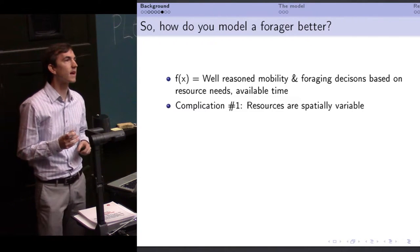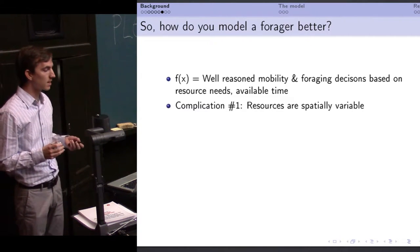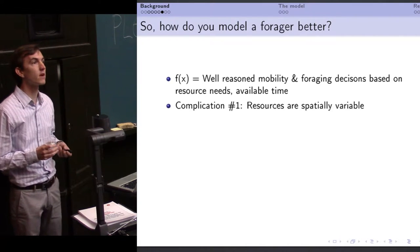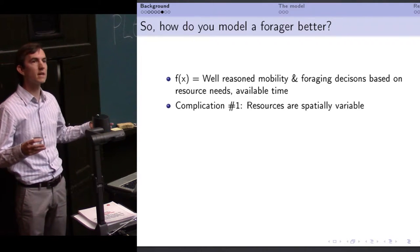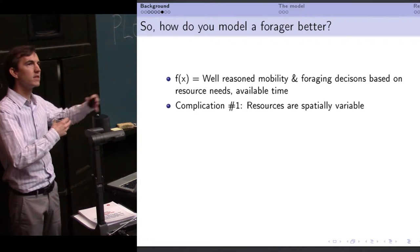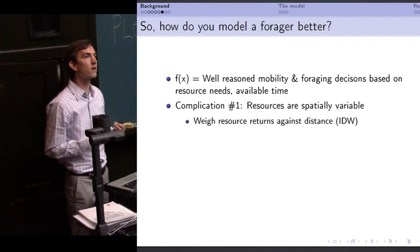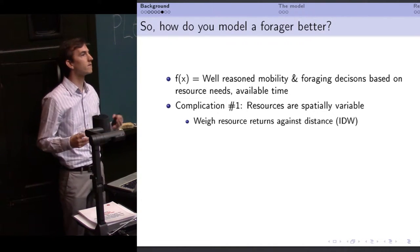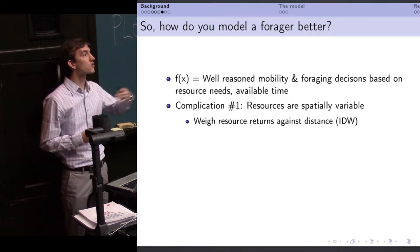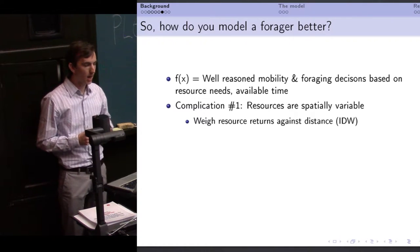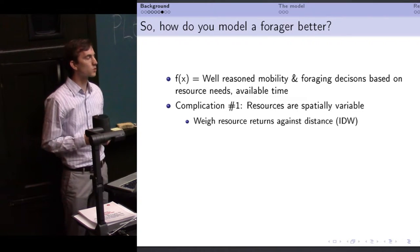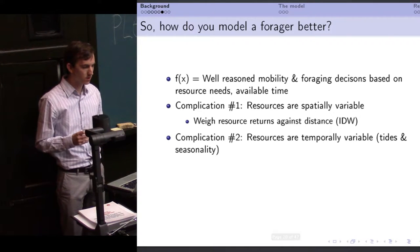Complication number one out of this is that of course resources are spatially heterogeneous, they're spatially variable. This is not very surprising, but you need to cope with that. You need to judge where your resources are, how close are they to you, what sort of loss do you take traveling to a distant patch, kind of inverse distance weighting kind of thing for GIS folks.